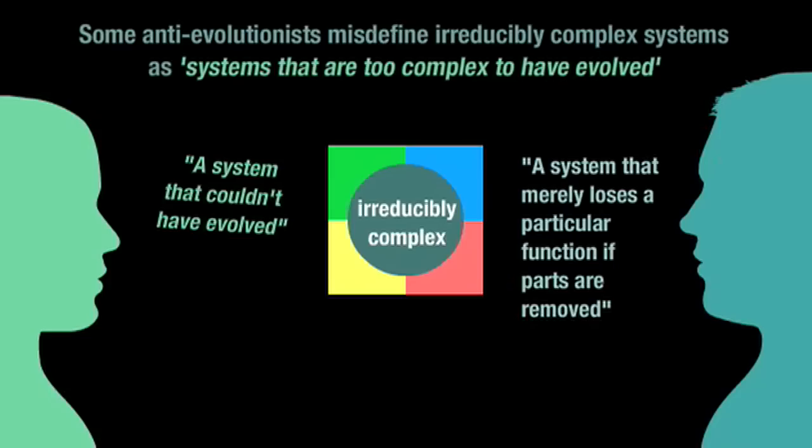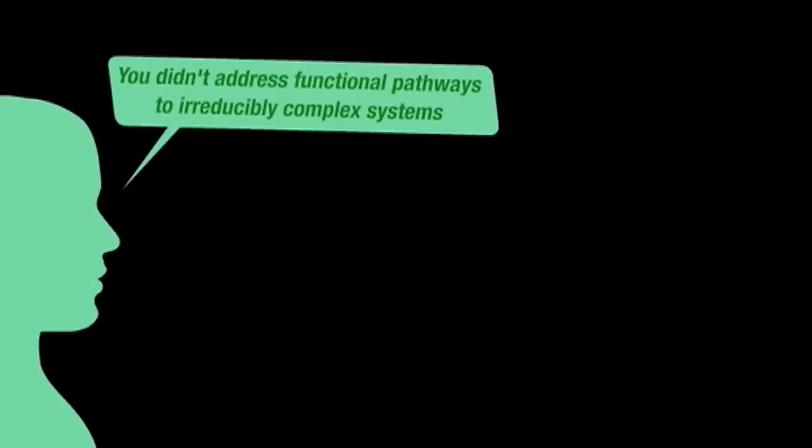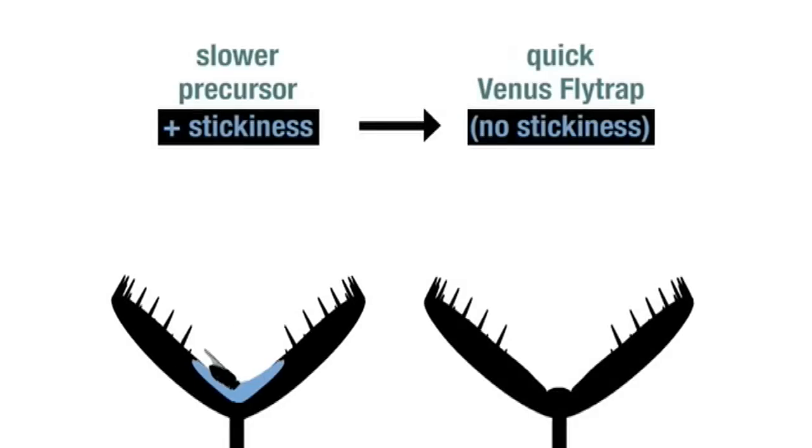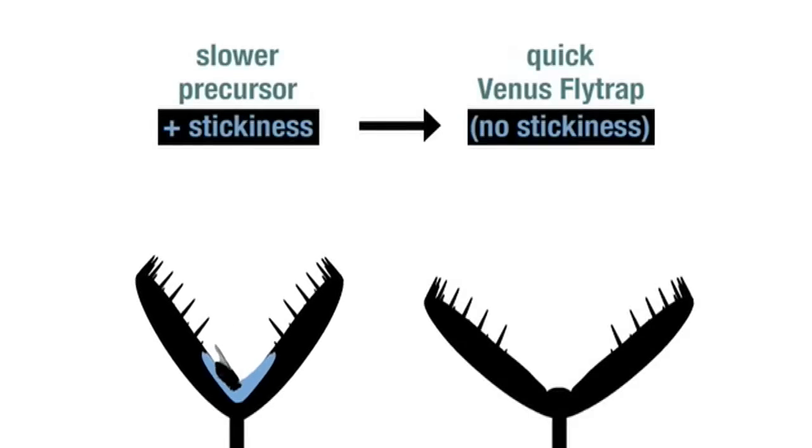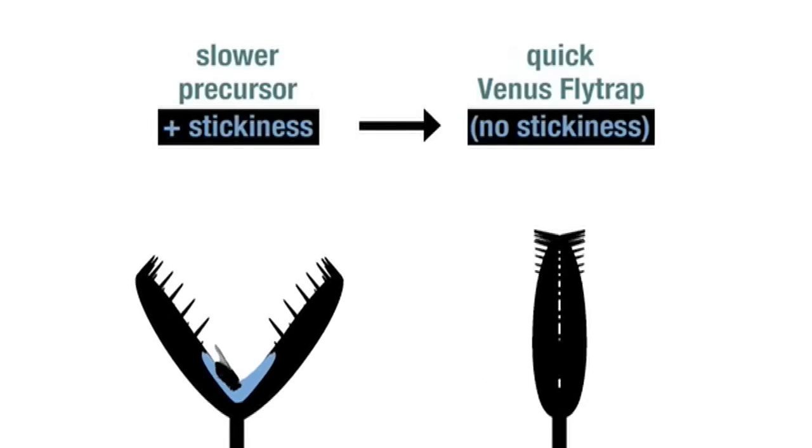I was criticized for not addressing functional pathways to irreducibly complex systems when I addressed it in several ways. During my discussion of the Venus flytrap, I explained how irreducible complexity can arise indirectly by the subtraction of one element that then makes other elements required. If a leaf traps nutritious insects more efficiently the stickier it gets and the quicker it closes around its prey, it shouldn't surprise us if it eventually closes so quickly that the stickiness becomes obsolete and is discarded as a needless physical cost.